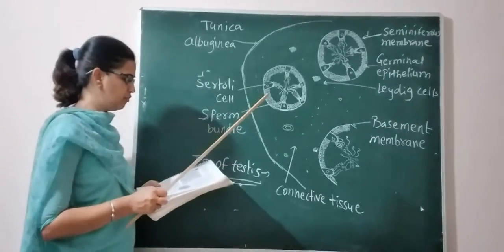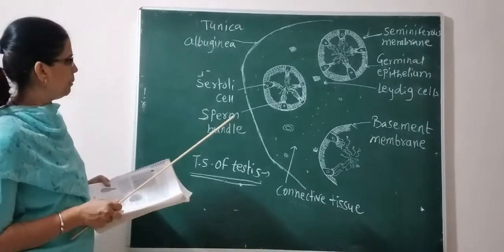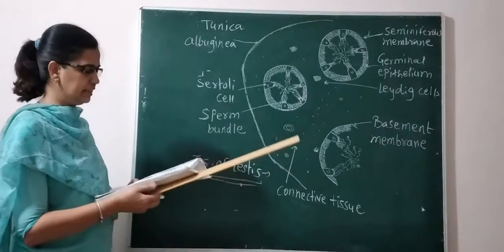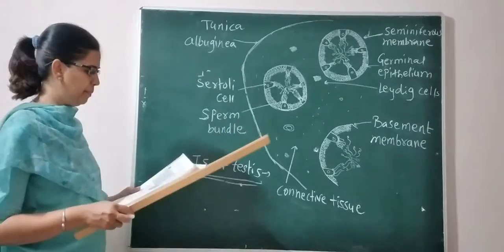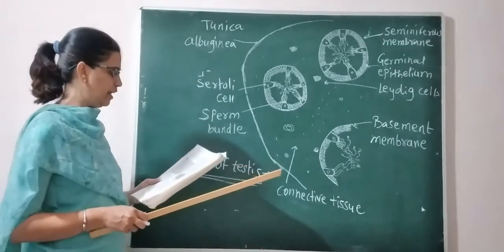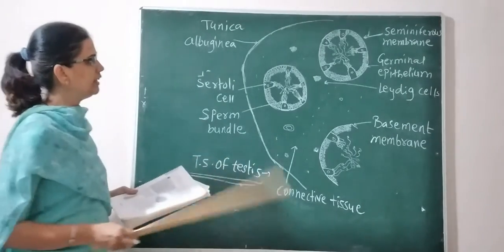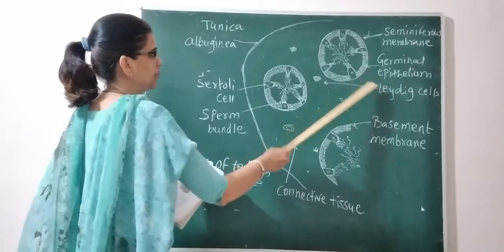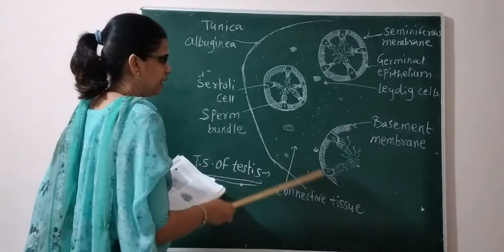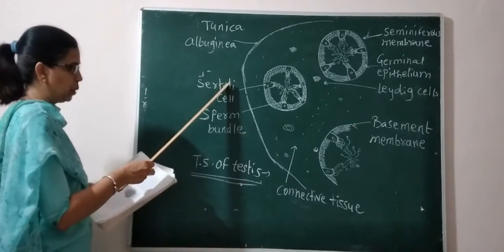Each lobule contains 1 to 4 highly coiled seminiferous tubules. Each seminiferous tubule is internally lined by cuboidal germinal epithelial cells and a few large Sertoli or sustentacular cells. These structures include the seminiferous membrane, germinal epithelium, Leydig cells, and basement membrane, along with connective tissue.